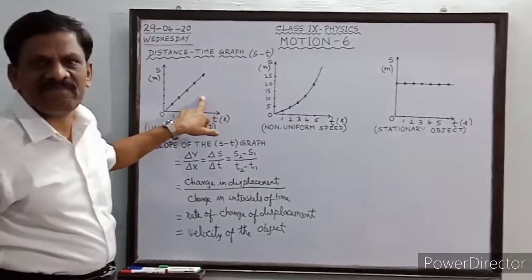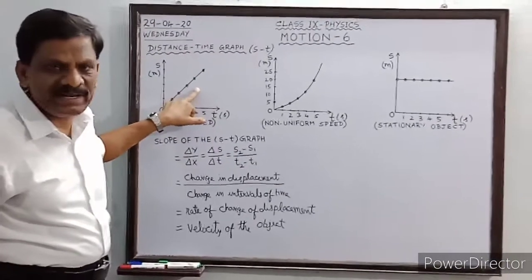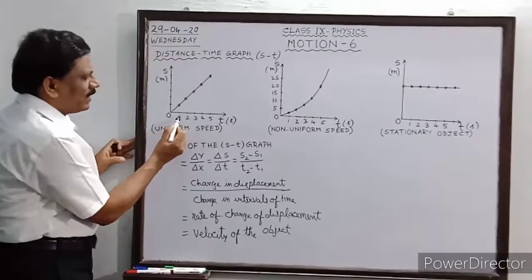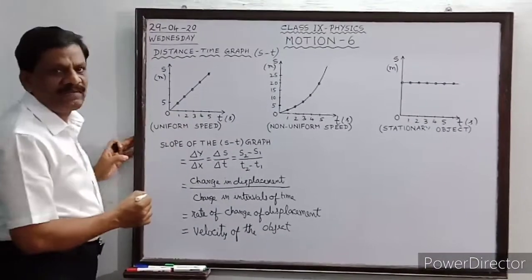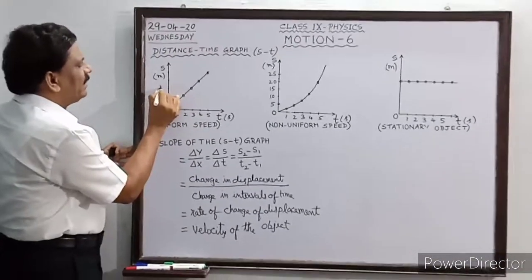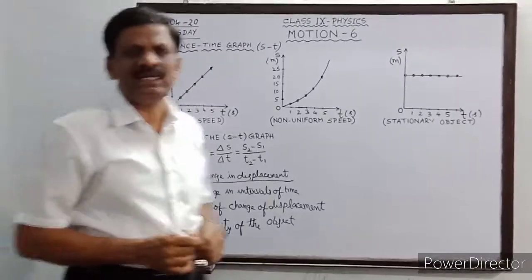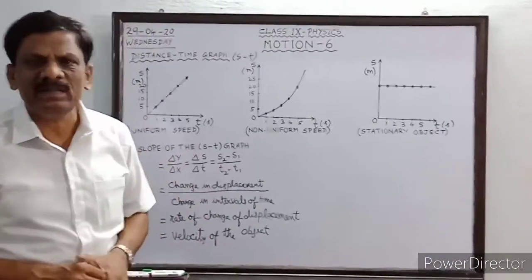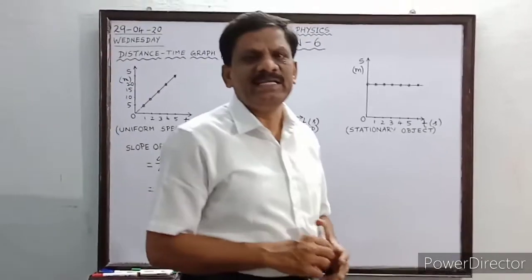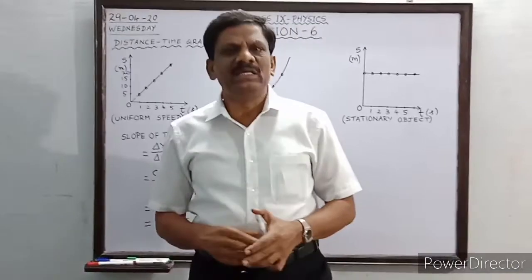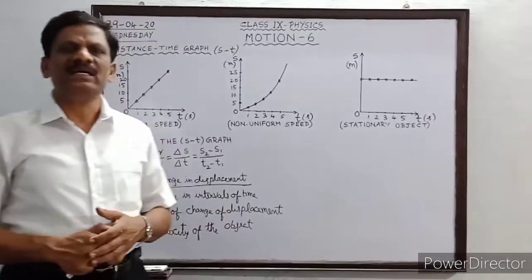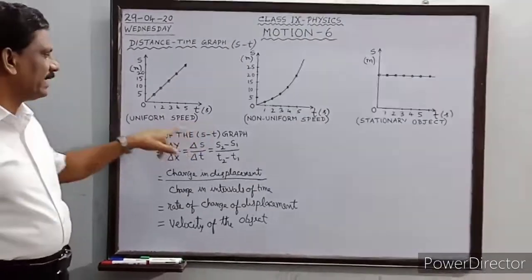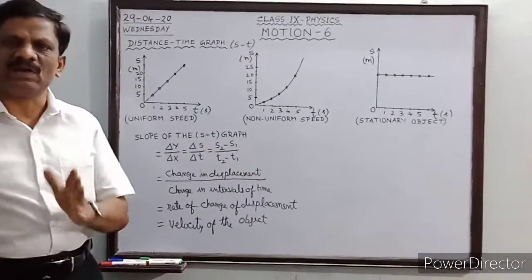From the first graph, we find it is a straight line passing through the origin. After 1 second, 5 meters is covered; after 2 seconds, 10 meters; after 3 seconds, 15 meters; after 4 seconds, 20 meters. Equal distances are covered in equal intervals of time, which indicates uniform speed. If it is a displacement-time graph moving along a straight line, this also indicates uniform velocity.